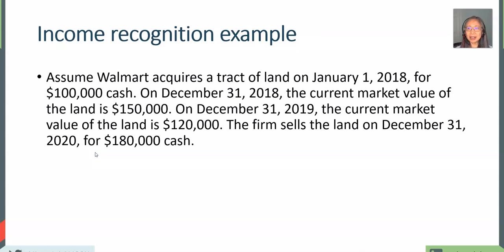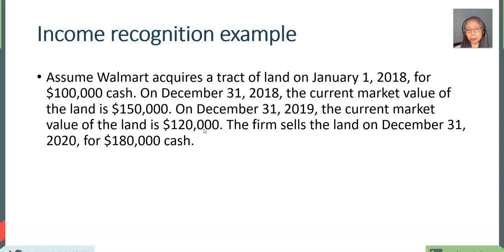In this example, let's say a company, Walmart, acquired a piece of land in 2018 for $100,000 in cash. At the end of the year, the market value of the land has gone up by $50,000. Then in another year, the value of the land went down. Finally, four years later in 2020, the company sells the land for $180,000 in cash.